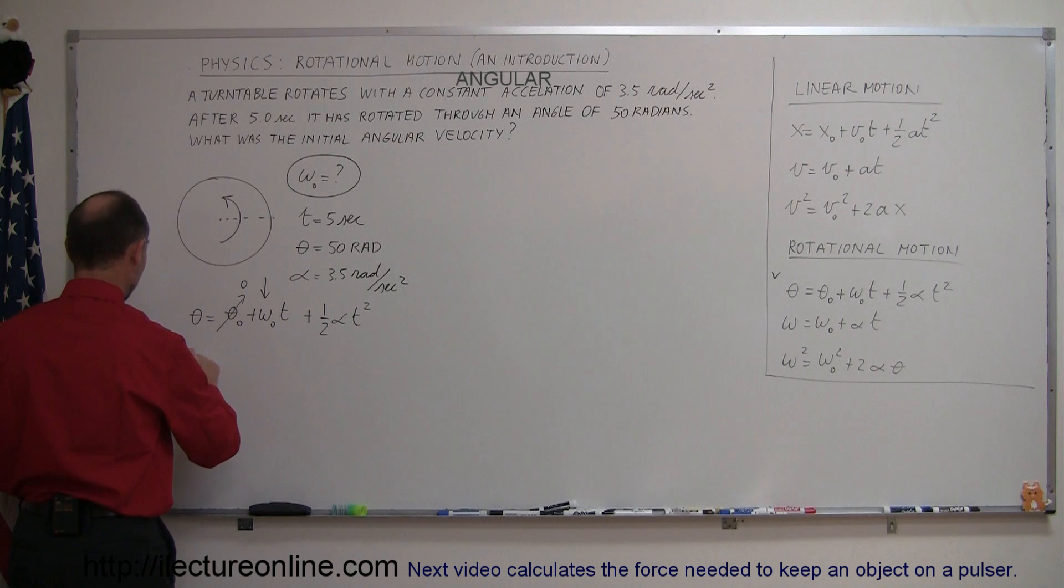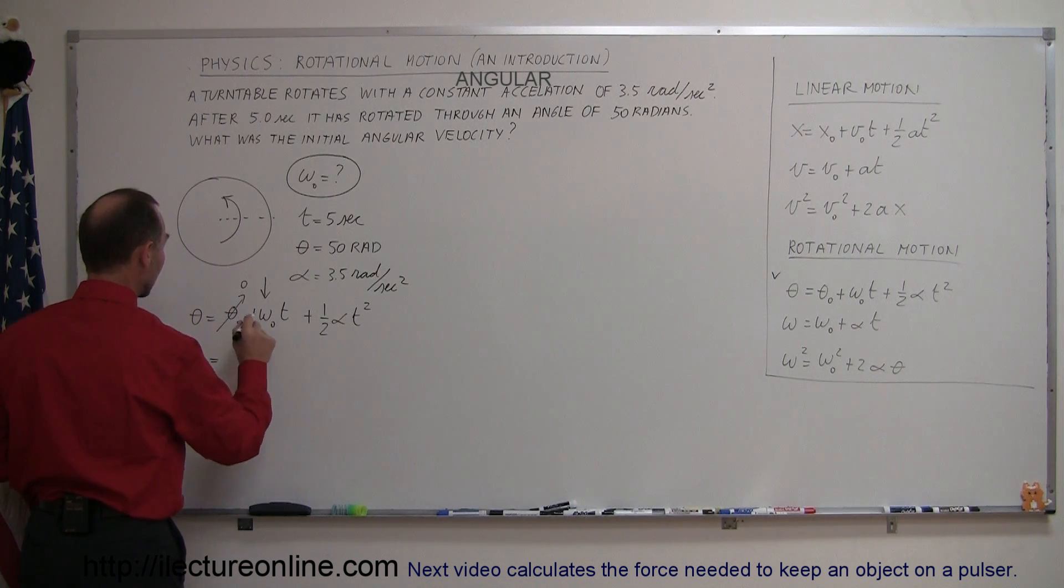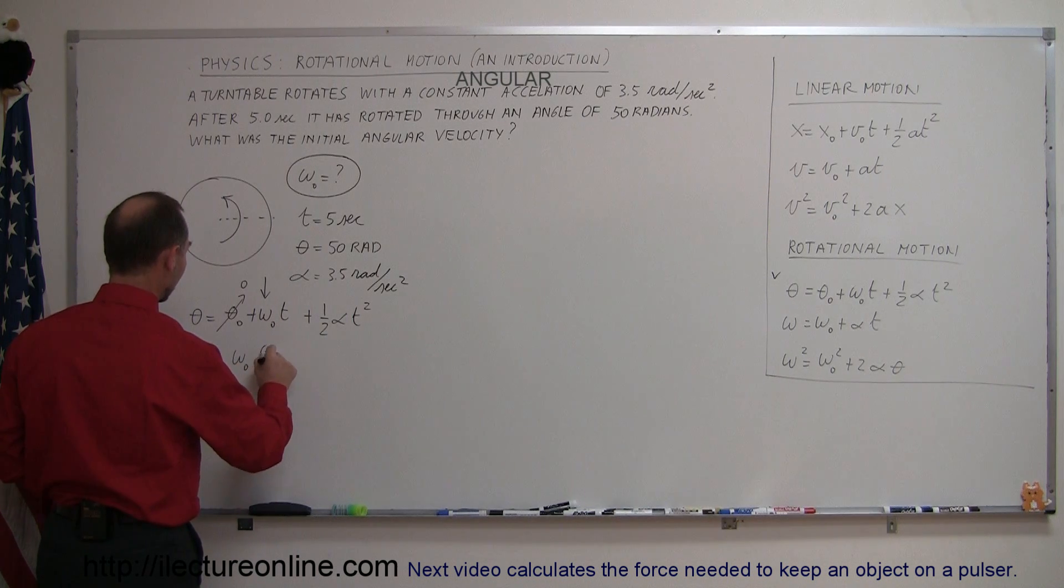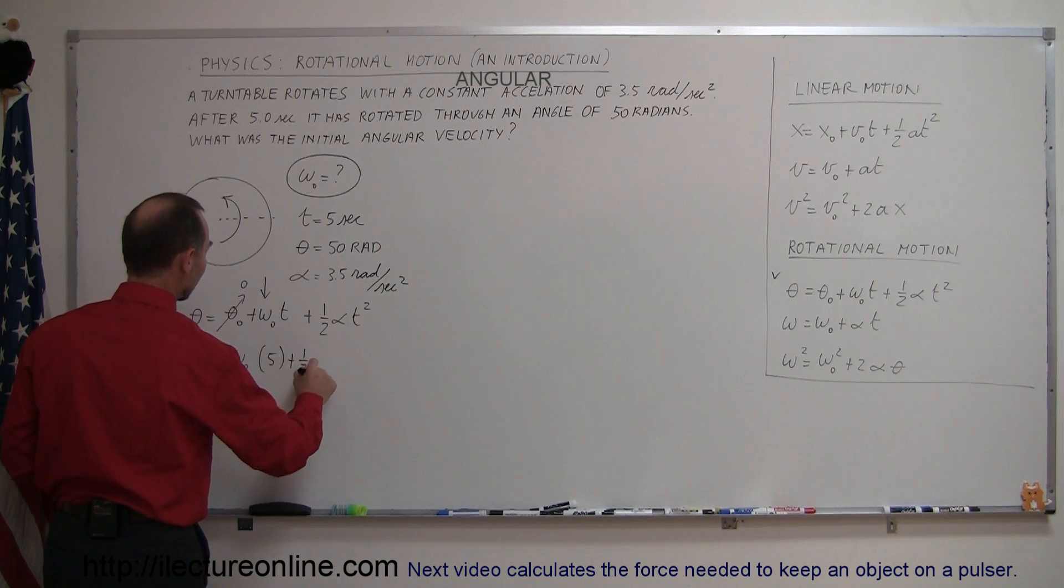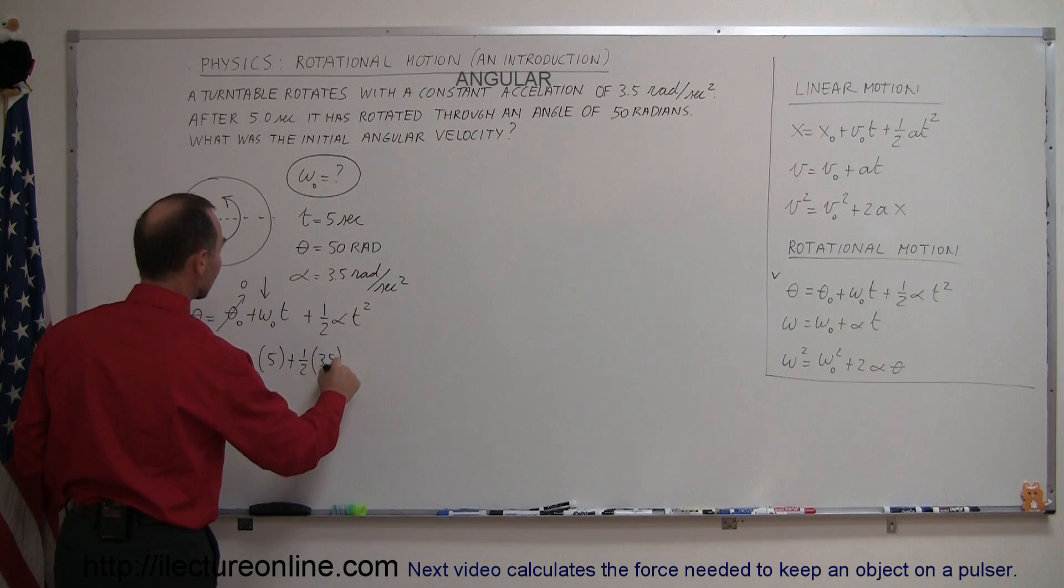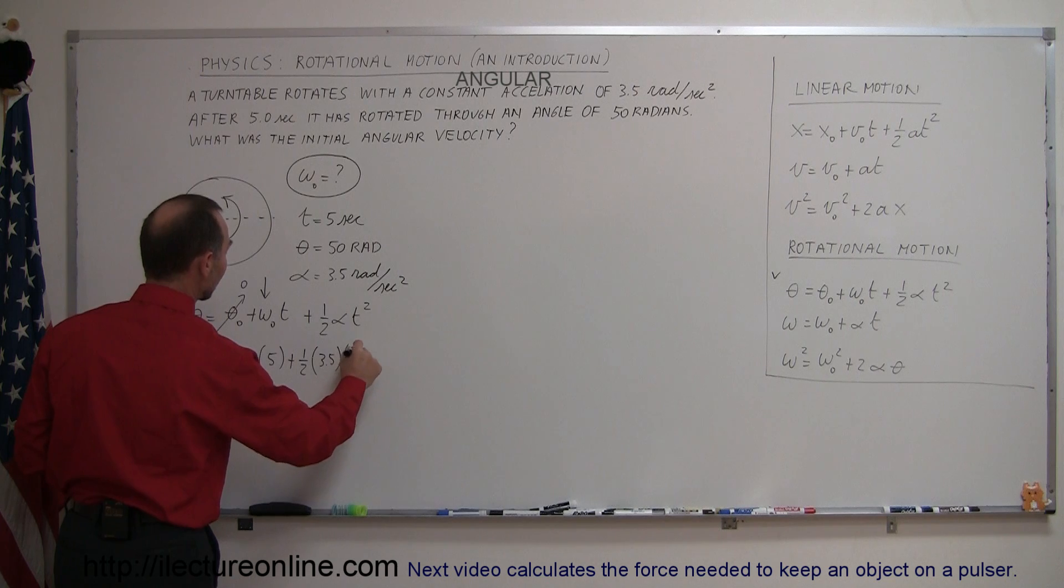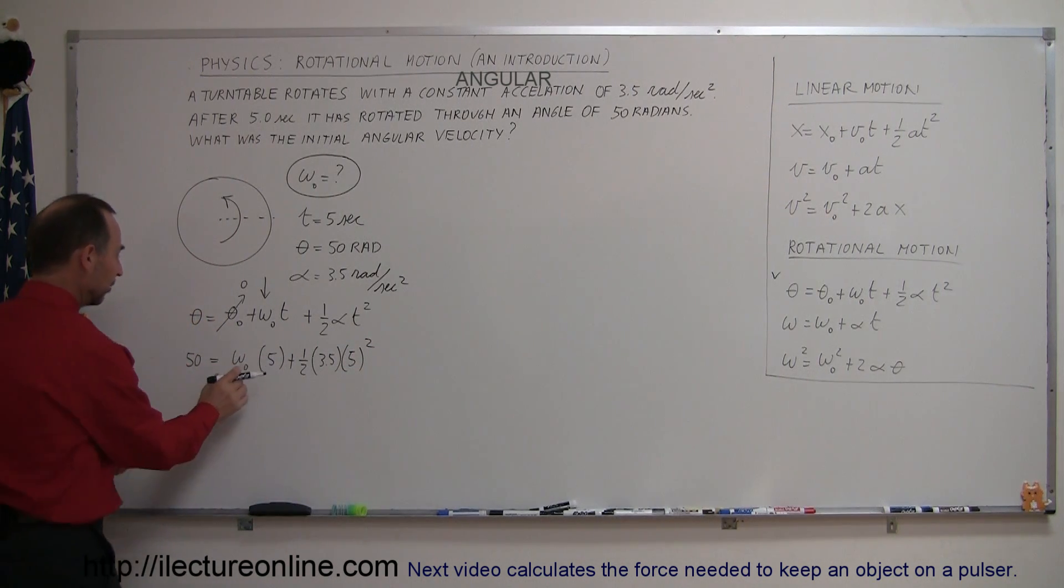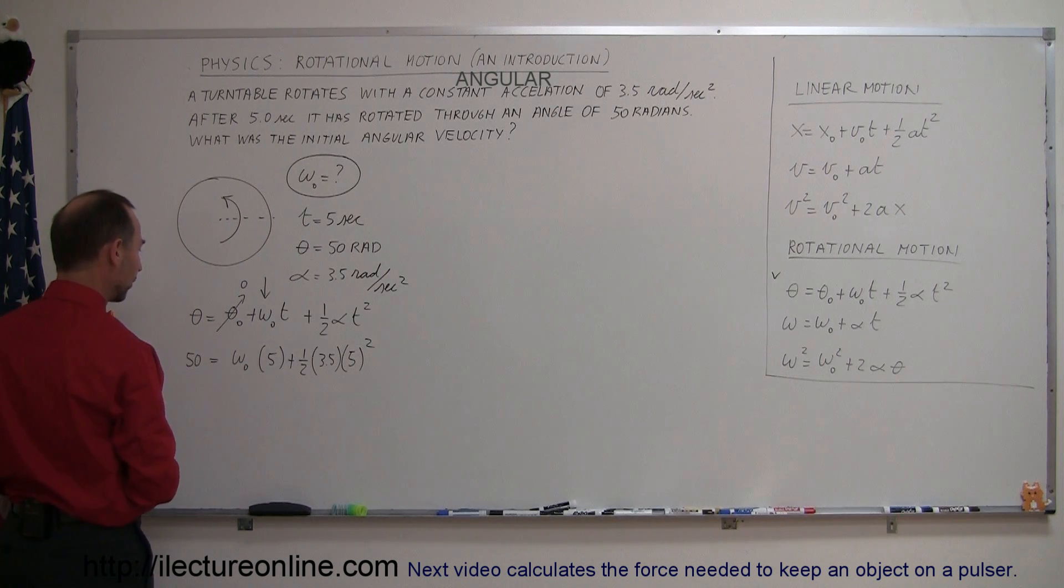So we have 50 radians is equal to omega initial, which is what we're looking for, times the time of 5 seconds, plus one-half times the angle acceleration of 3.5 radians per second squared times time squared, which is 5 squared. Now notice I did not put in the units because it gives us a cleaner equation to work with, and this is the variable we're looking for.